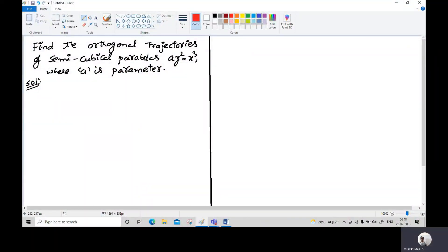Hi everyone, this is another example on orthogonal trajectories. Find the orthogonal trajectories of semi-cubical parabolas ay² = x³ where a is the parameter.